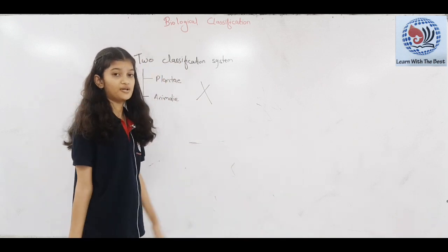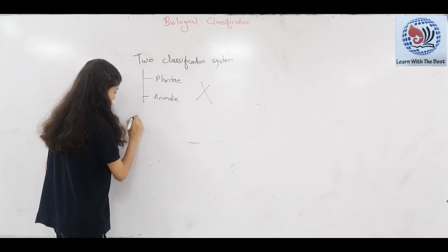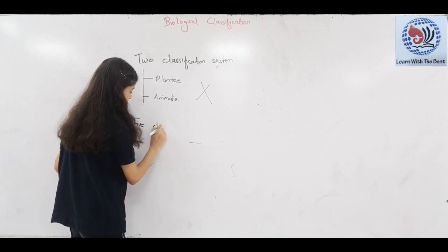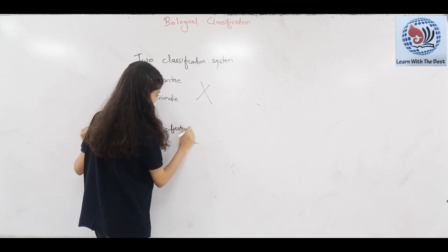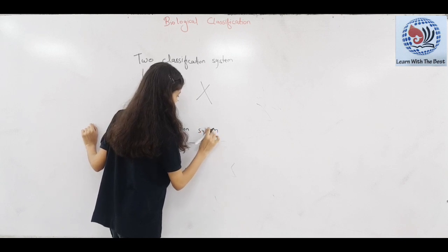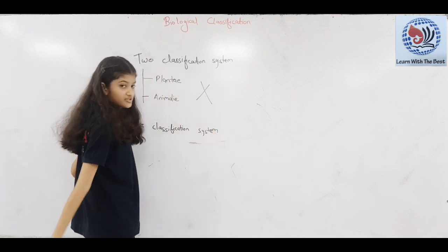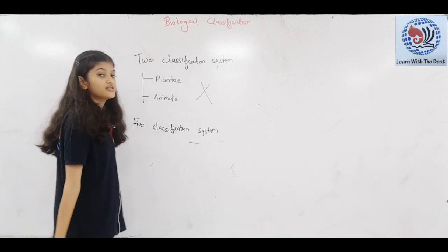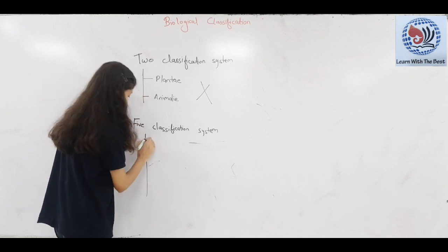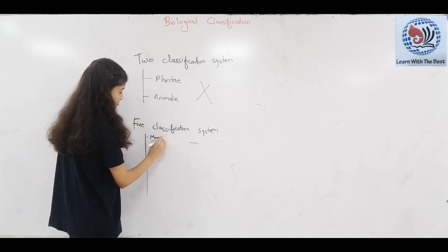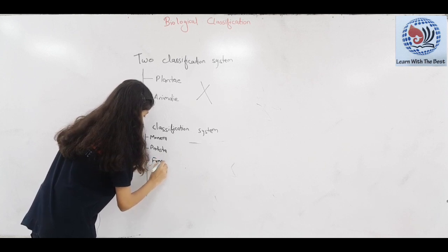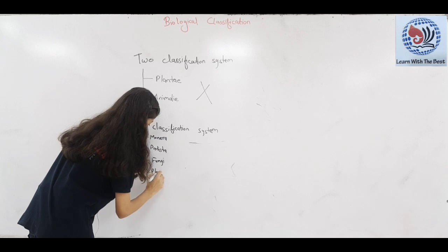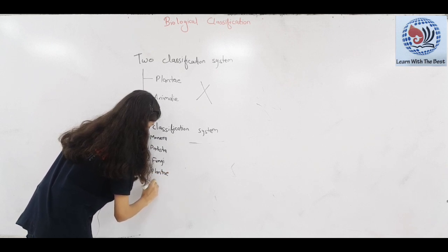This is our five classification system, which is given by R.H. Whittaker in 1969. In our five classification system, the 1st kingdom is Monera, 2nd is Protista, 3rd is Fungi, 4th is Plantae, and 5th one is Animalia.